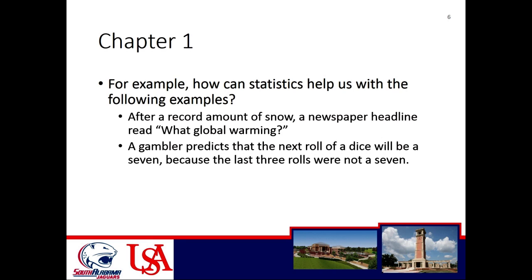Another example: a gambler predicts the next roll of a dice will be a 7 because the last three rolls were not a 7. Statistics is heavily involved with probability, and as you probably guessed, just because the last three rolls were not a 7 has no impact on what the future dice roll will be if it's a fair dice. No matter what you rolled in the past, it has no effect on what you roll in the future, and statistics can help us understand why that's the case.